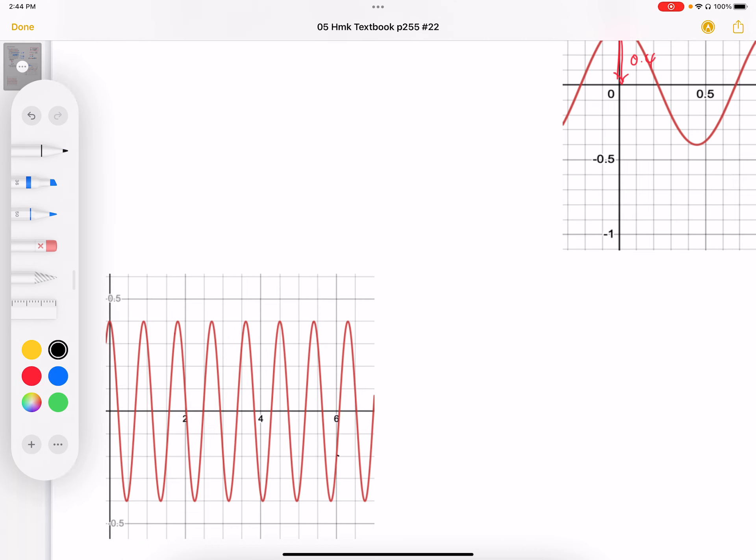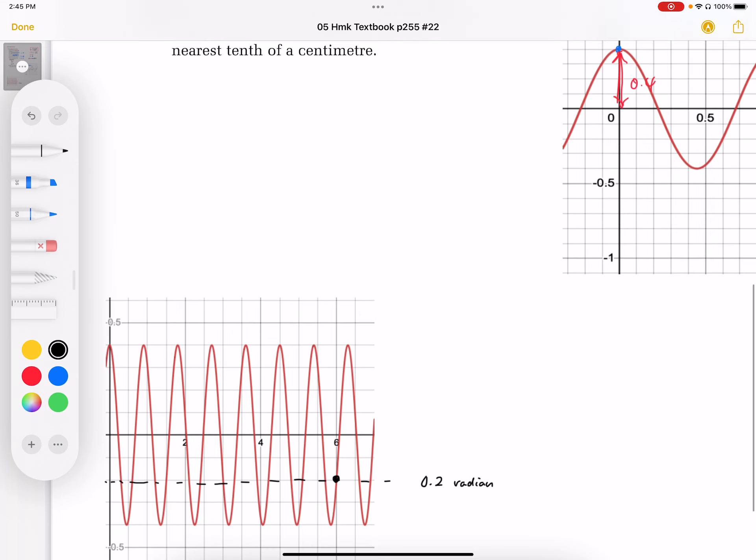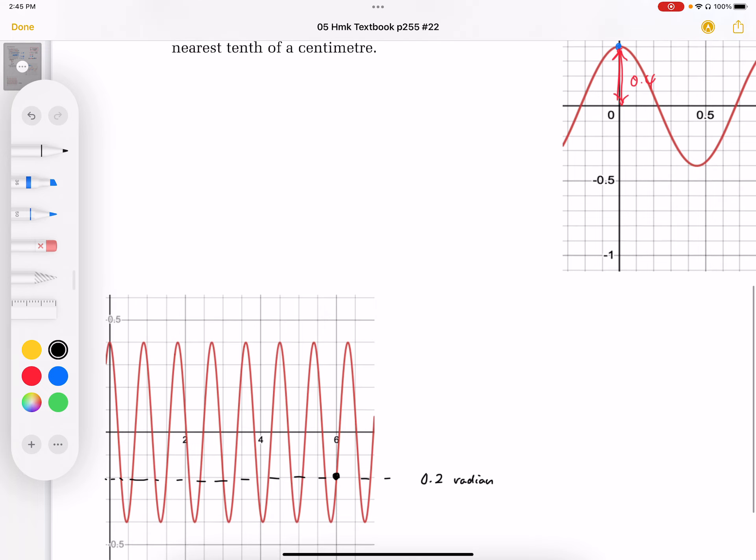And when I look at 6 seconds, we end up with this position right there. And that position looks like to be approximately 0.2 radians. So it's kind of halfway through its swing when it hits that. At 6 seconds, it's kind of halfway through its swing.